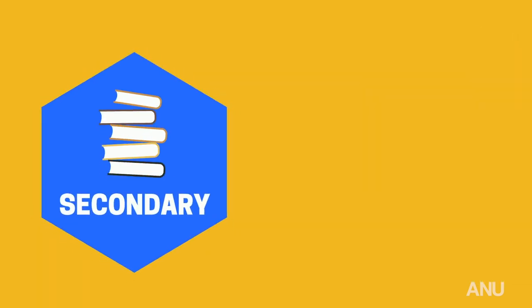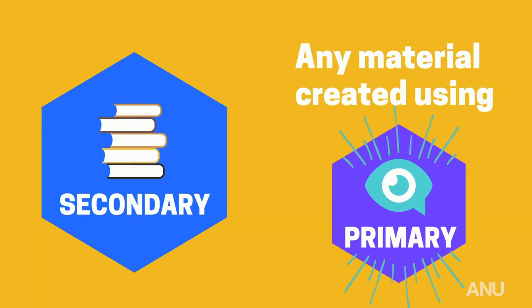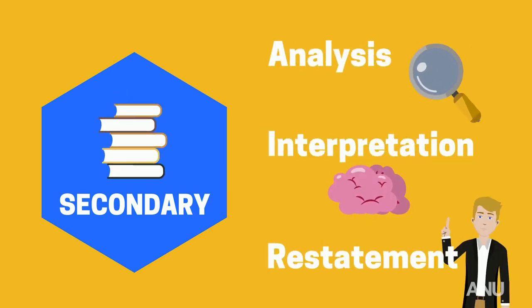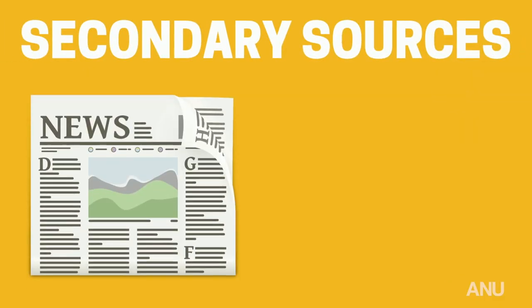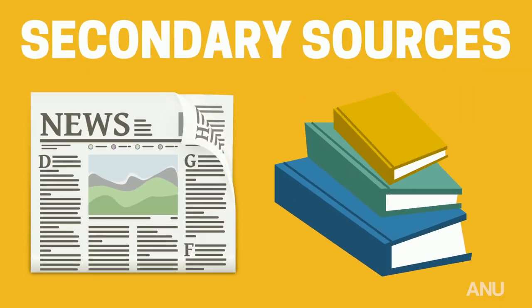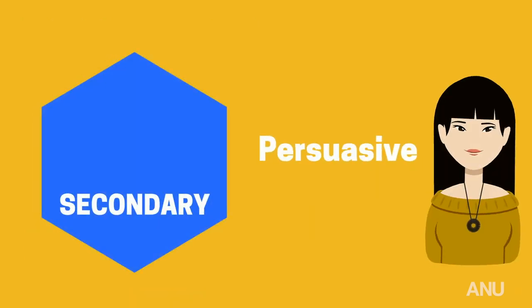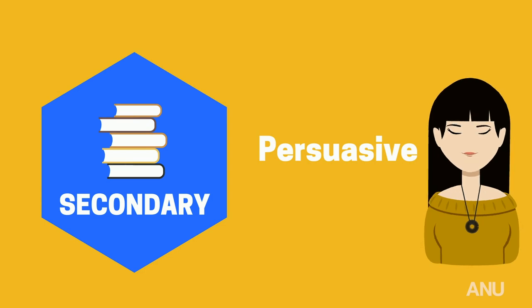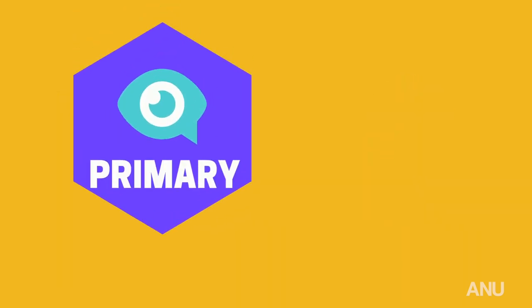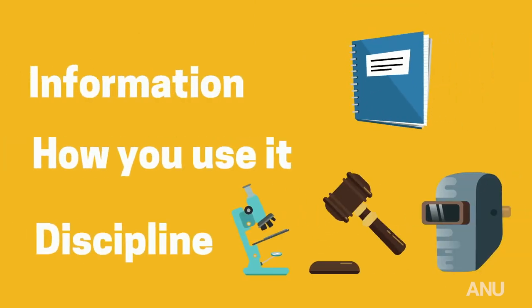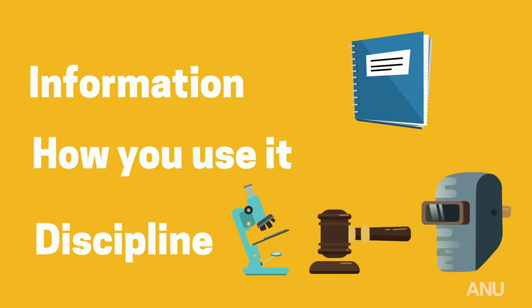The next is secondary sources. This is any material created using primary sources. Secondary source material provides analysis, interpretation, or a restatement of primary sources. Newspaper articles and some textbooks are examples of secondary sources. While primary sources are considered authoritative, secondary sources are considered to be persuasive. Unfortunately, what constitutes a primary or a secondary source is not absolute — it depends on the information it contains, how you are going to use it, and the discipline you are studying.